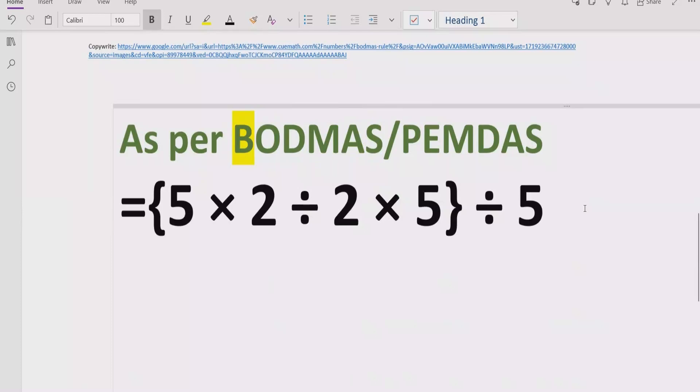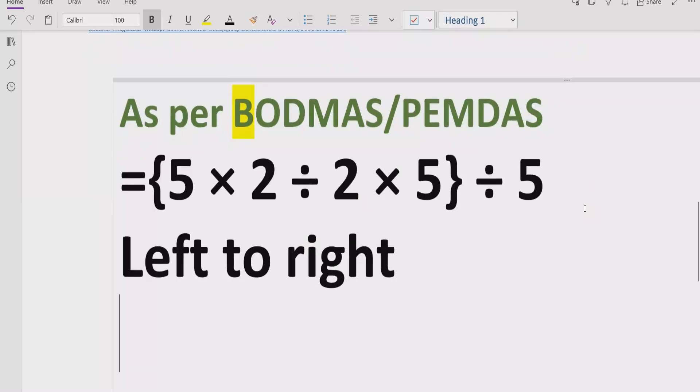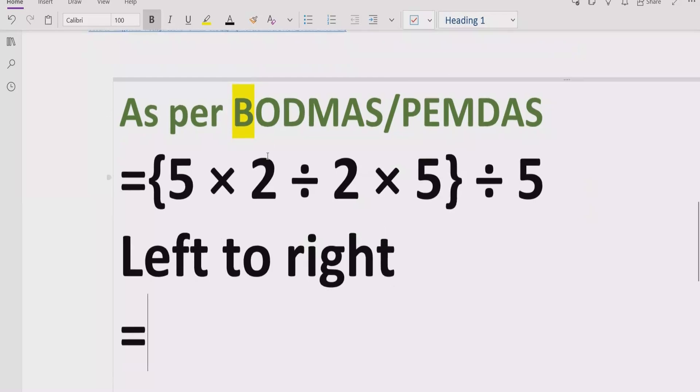But this bracket contains multiple operations, so we have to solve according to the rule. The rule says that you have to go left to right first and find out multiplication and division and which is coming first. In our expression, we have first this multiplication.